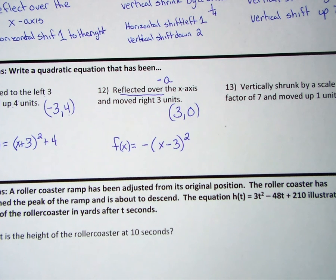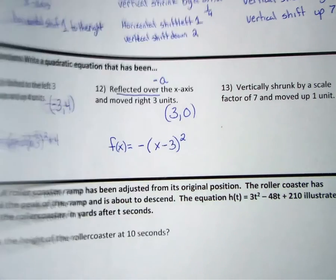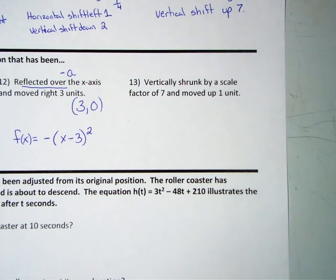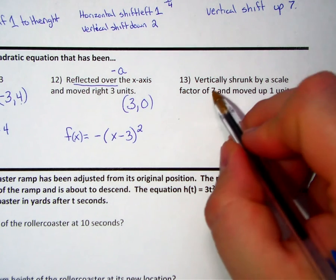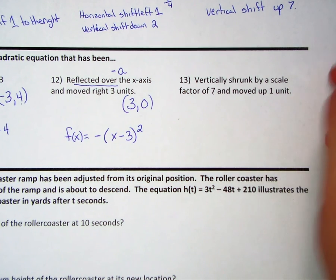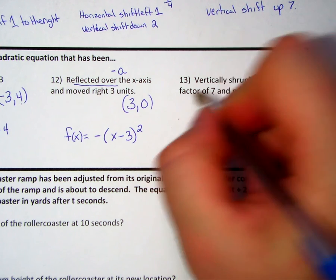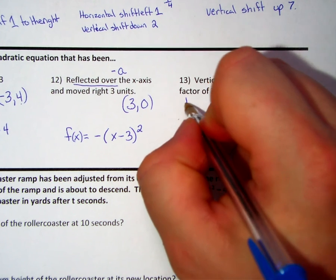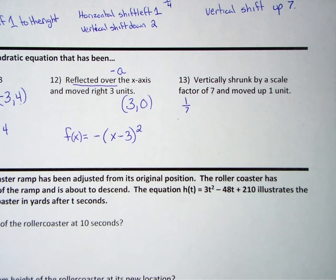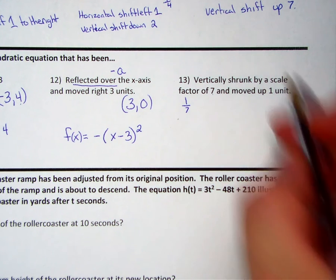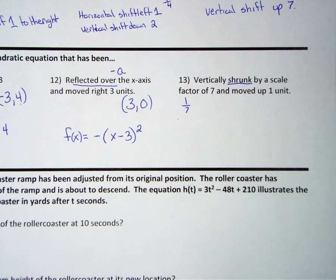Number thirteen: we want vertical shrink by a scale factor of seven and move up one unit. Now if we have vertically shrunk by a scale factor of seven, another way we can say that is that the scale factor is less than one, so it is actually one-seventh. I prefer to see your scale factor stated in forms of a fraction when you are shrinking, but sometimes it will be notated either way.